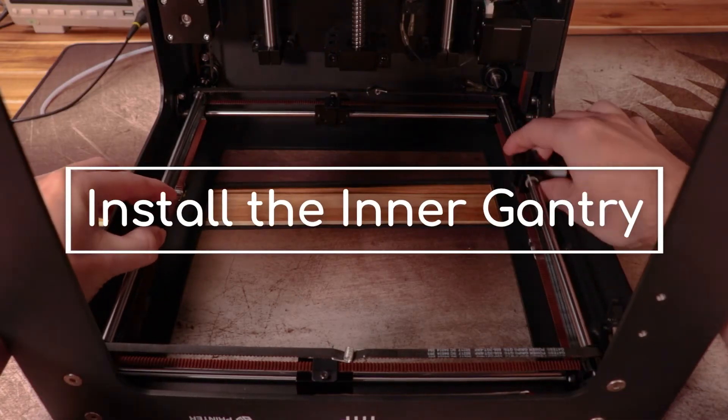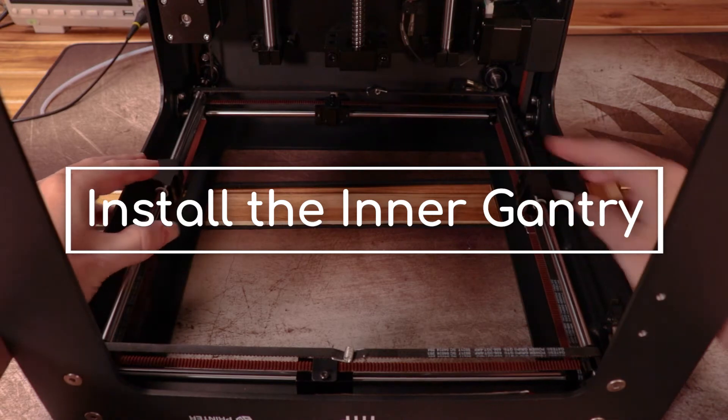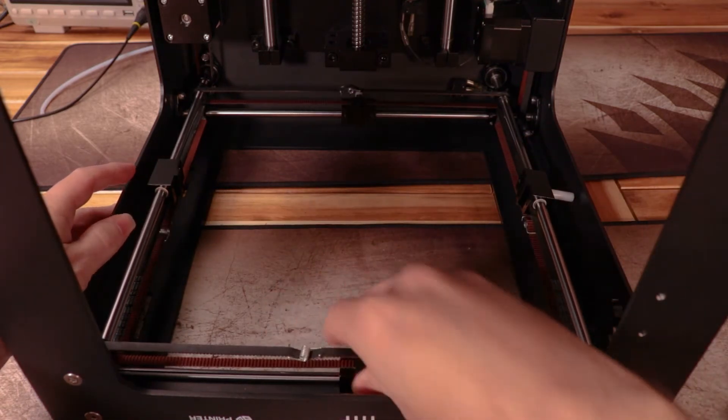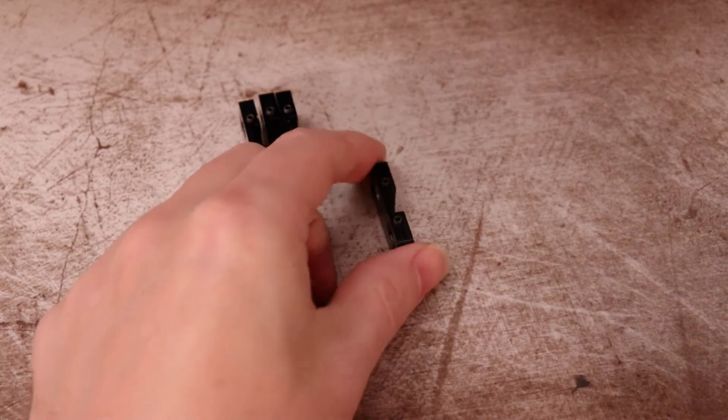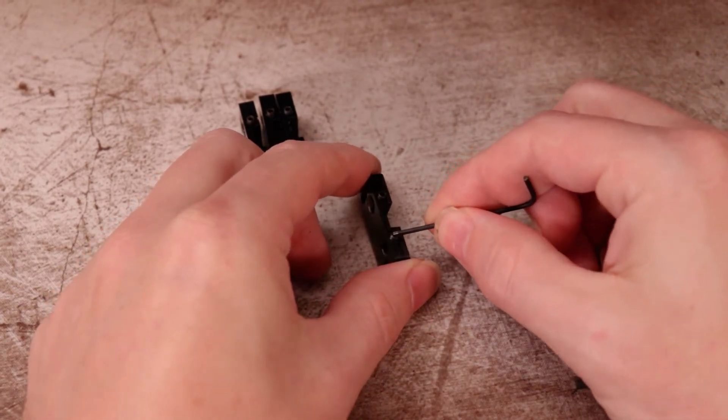Alright, the outer gantry is assembled but the slides should still move independently of each other. And now we're going to work on the inner gantry. This next part may seem a little odd, but it is my preferred way to do it and I'll show you why in a little bit.